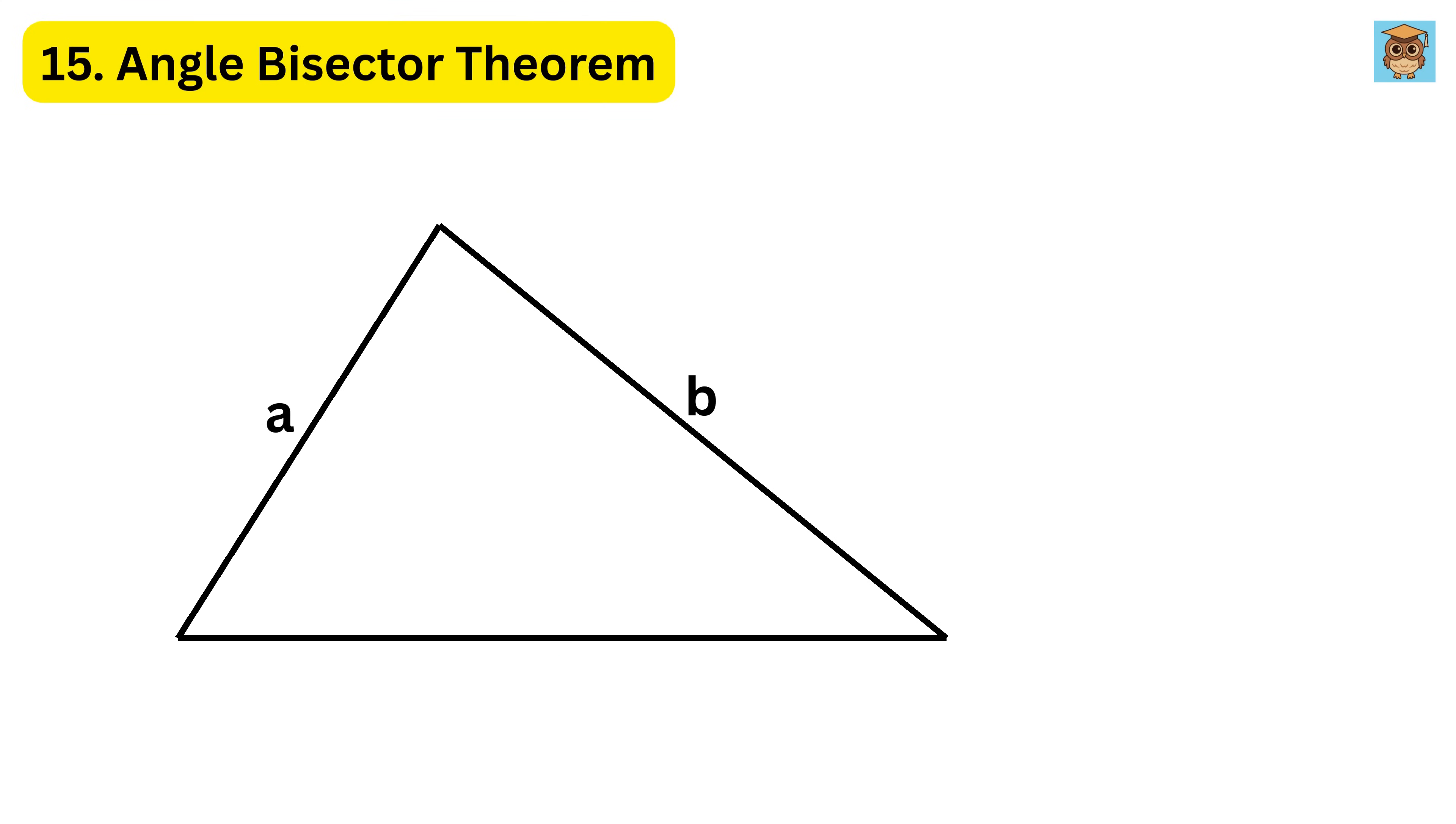15. Angle bisector theorem. It says that if you draw a line inside a triangle that cuts an angle into two equal parts, this line is called an angle bisector, then it divides the opposite side into two segments that are proportional to the other two sides of the triangle. Imagine a triangle with sides four centimeters, six centimeters, and an unknown third side. If we draw an angle bisector from one of the angles to the opposite sides, it will split that side into two parts in the same ratio as the other two sides.